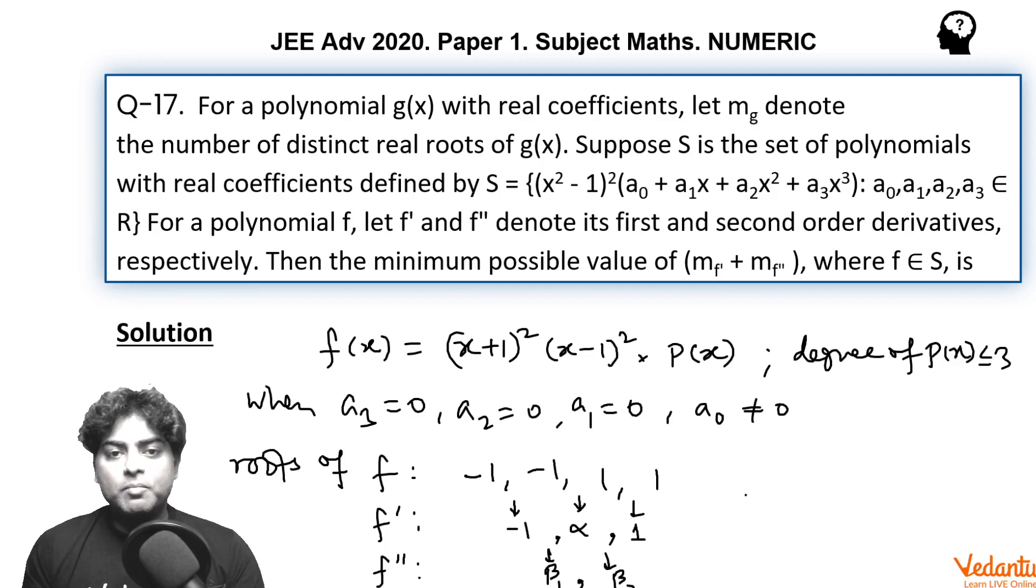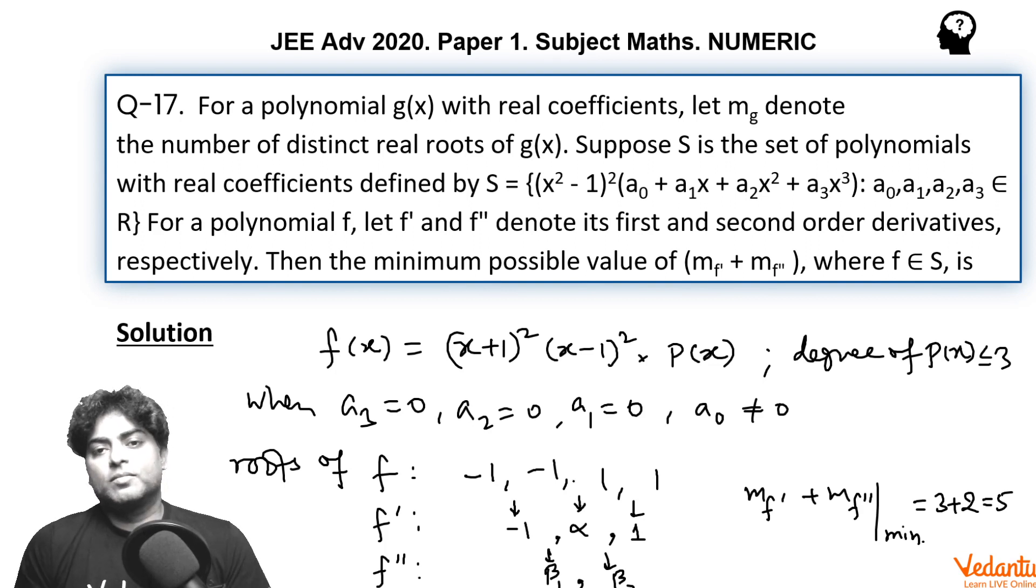Finally, the minimum possible value of m_f' in this case plus m_f'' equals minimum possible equals 3 + 2, that is 5. So the answer to this question must be 5. Let's discuss it furthermore.